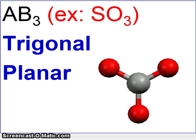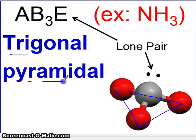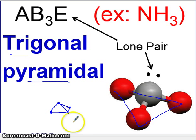The next shape is called Trigonal Pyramidal, which is actually similar to Trigonal Planar. Again, you have three atoms arranged in a triangle — you can still see the triangle. But in this case, it's pyramidal rather than planar, meaning in three dimensions it looks like a pyramid. One of the atoms is here at the top, and the rest of the atoms are below it — it is no longer in a plane. The reason they're not in a plane is because of the lone pair.